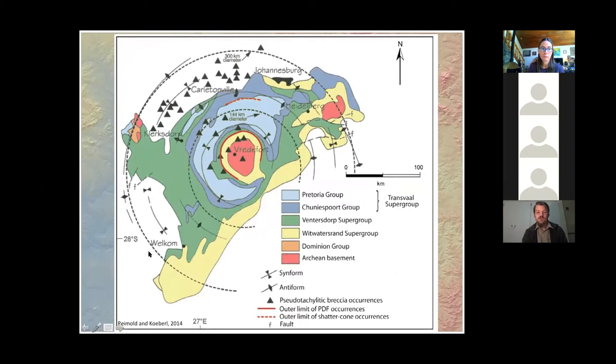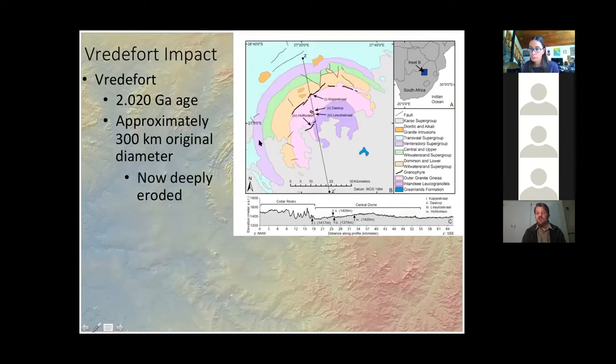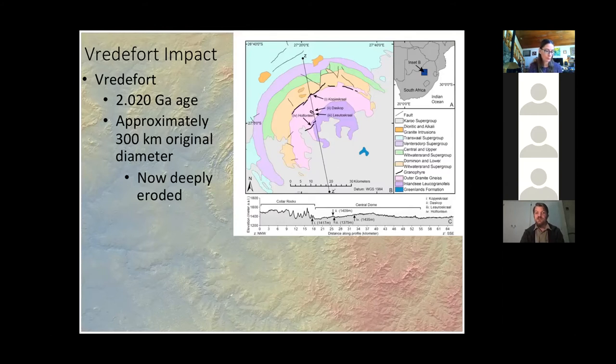The full scale of the structure is not entirely agreed upon, but most estimates put it in the neighborhood of about 300 kilometers diameter. Vredefort struck the earth probably about a little over 2 billion years ago. And despite the fact that it originally had a diameter of 300 kilometers, it has been deeply eroded. We believe that there's been about 10 kilometers of erosion that have taken place.